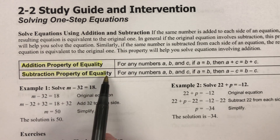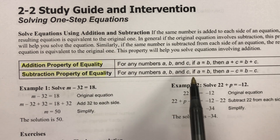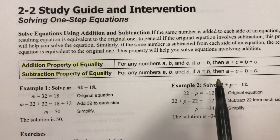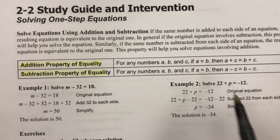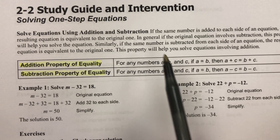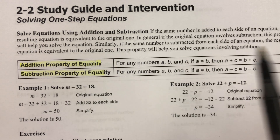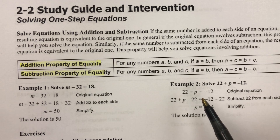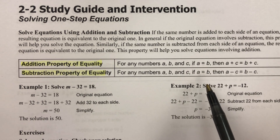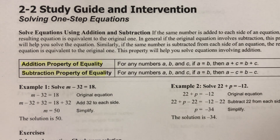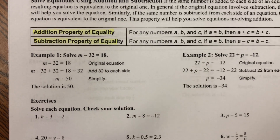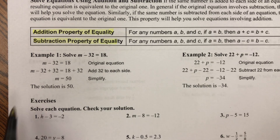Same thing with subtraction. Any property of equality is a rule we use to keep both sides of an equation equal. They start off equal, we want to keep them equal. So even if I change the way one side looks, I have to do the same exact thing on the other side of the equal sign. There are a couple examples here.